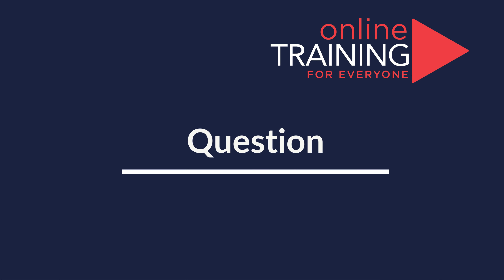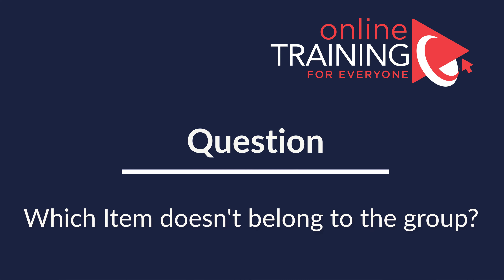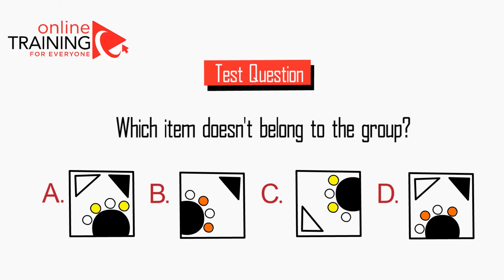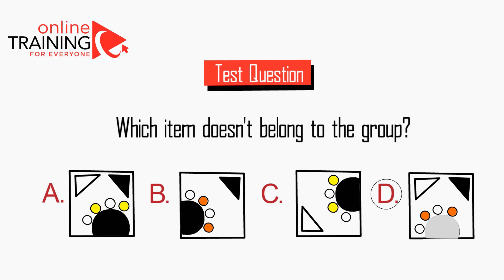This type of question is very frequently used on the test. Typically you're asked to determine the item which does not belong to the group. You're presented with multiple items — choices A, B, C, and D — each represented as a square containing multiple different items inside. You need to determine the item which does not belong to the pattern or sequence.